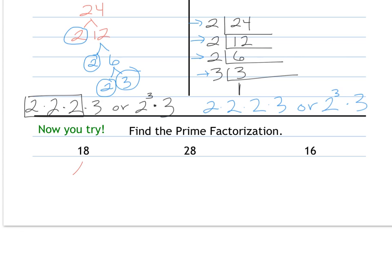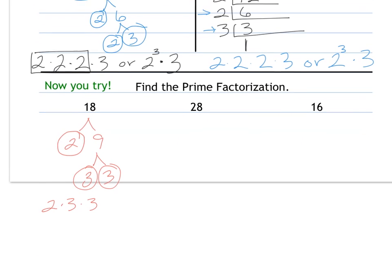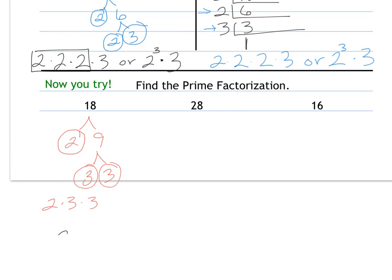For 18, I'll pick the tree. I pick 2 times 9. 2 is prime, so it's done. 9's factors are 3 and 3, and those are prime. So this is 2 times 3 times 3, or 2 times 3 to the second power.